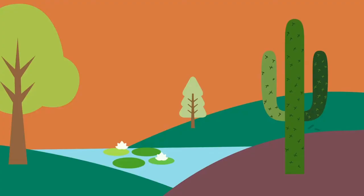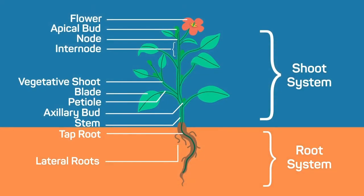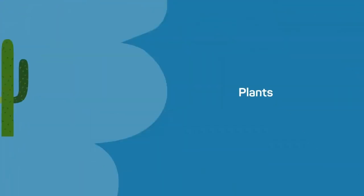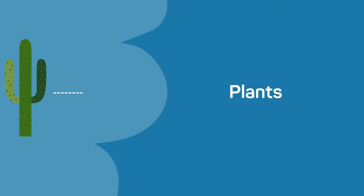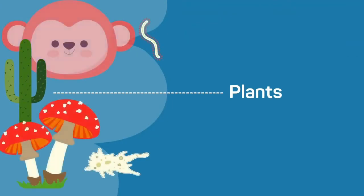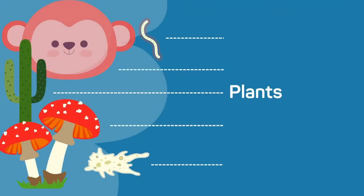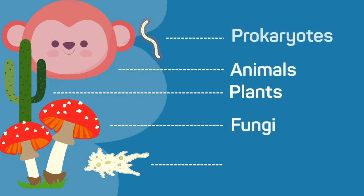Plants come in all different shapes and sizes, but they all have several structural features in common. Plants belong to the same kingdom. Can you remember what the other four kingdoms are? Animals, fungi, prokaryotes and protoctista.